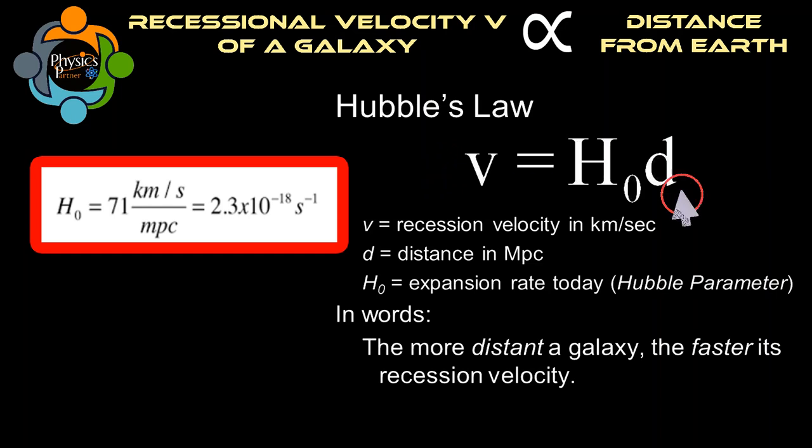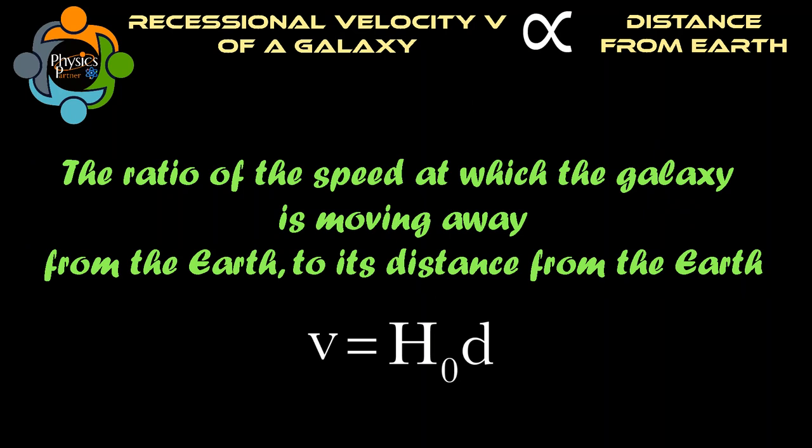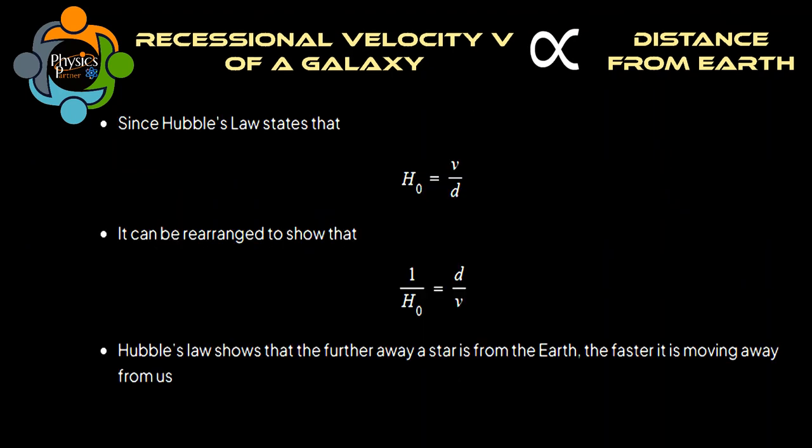So if we summarize the Hubble constant, we can say that H₀ is the ratio of the speed at which the galaxy is moving away from Earth to the distance from Earth. We already discussed that H₀ is equal to v over d, so we can also rearrange as 1 over H₀ is equal to d over v.